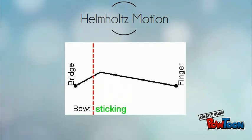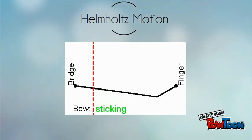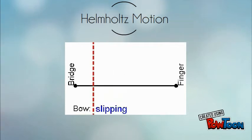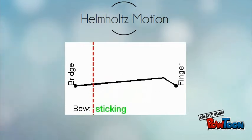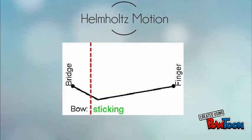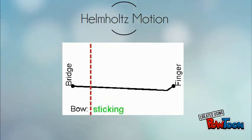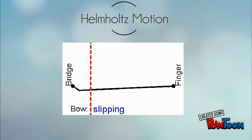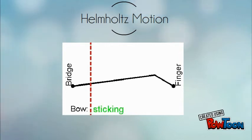Each time the corner passes the bow, it triggers a transition between two frictions: stick and slip. When the corner travels from the bow to finger and back, the string sticks to the bow and is dragged along with it. And then it slips as the corner travels to the bridge and back.